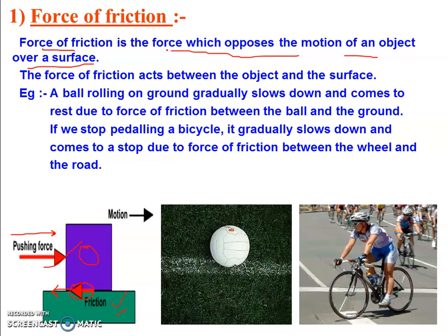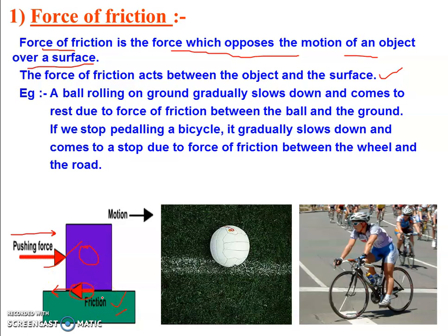We can define it as: Force of Friction is the force which opposes the motion of the object over a surface. The force of friction acts between the object and the surface of another body — it is always applicable at the surface in contact only.